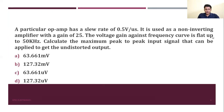Second question: A particular op-amp has a slew rate of 0.5 V per microsecond. It is used as a non-inverting amplifier with a gain of 25. The voltage gain versus frequency response is flat up to 50 kilohertz. Calculate the maximum peak-to-peak input signal for undistorted output.